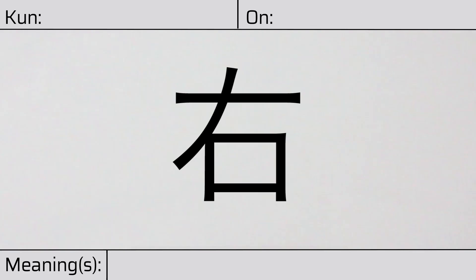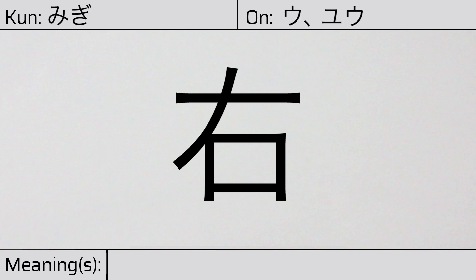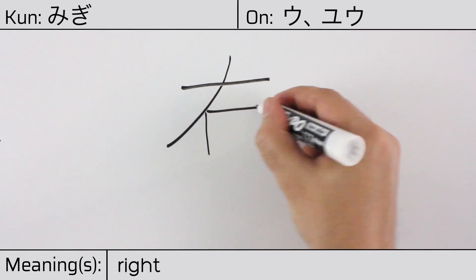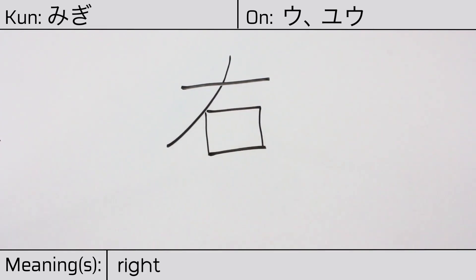Welcome to this lesson on Japanese kanji. Today, we'll be discussing this character. This kanji has a kunyomi or Japanese reading of migi, and it has onyomi or Chinese readings of u or yu. This character has the meaning right. Here is the stroke order. This character is made up of the following radicals or parts.